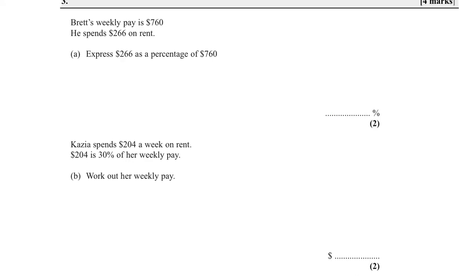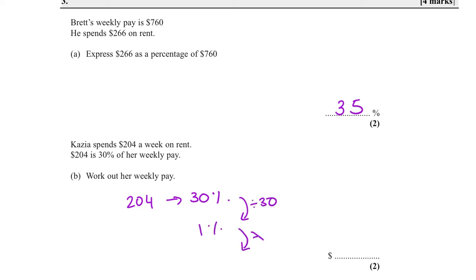Express as a percentage: 266 ÷ 760 = 0.35 × 100 = 35%. Casio spends £204 a week on rent, and 204 is 30%. So 204 is equivalent to 30%. Find 1% by dividing by 30, then find 100% by multiplying by 100. So 204 ÷ 30 = 6.8, times 100 gives 680.